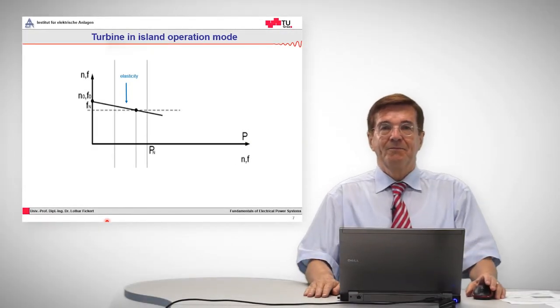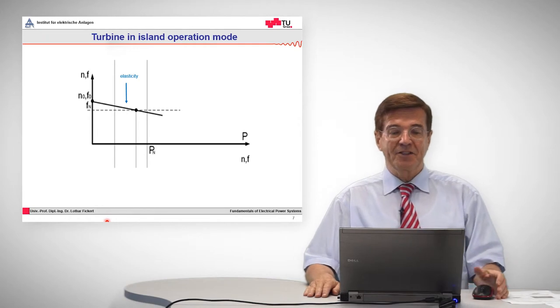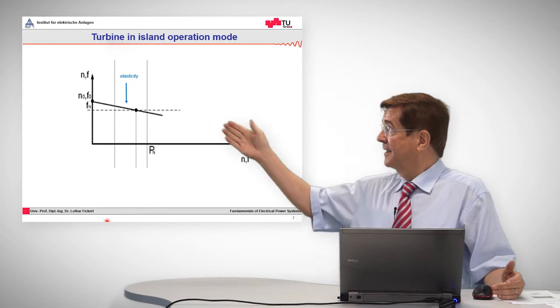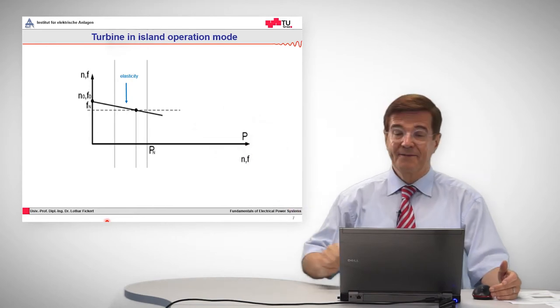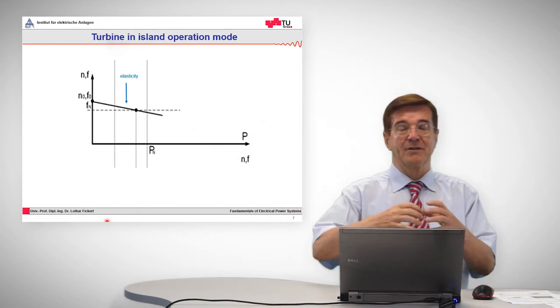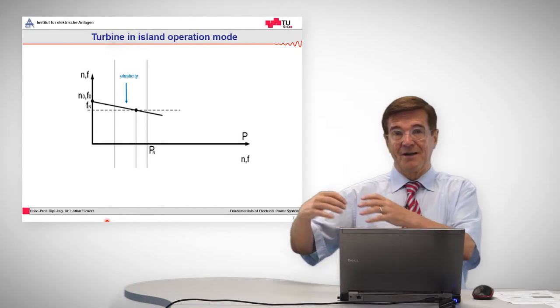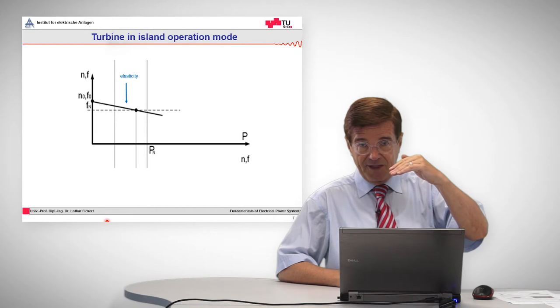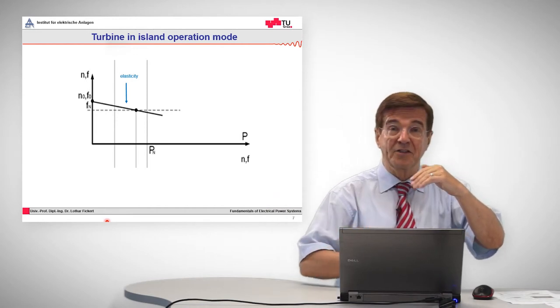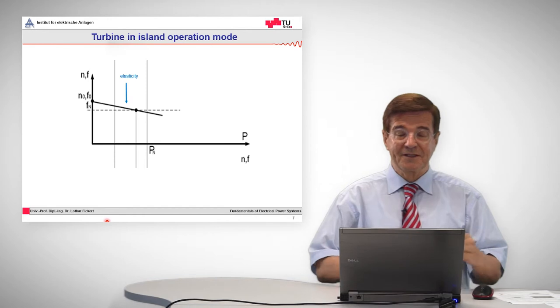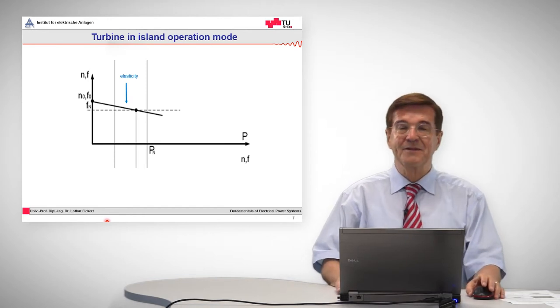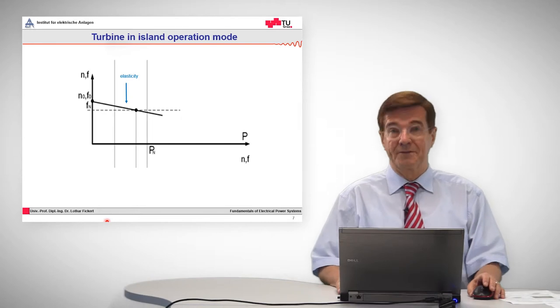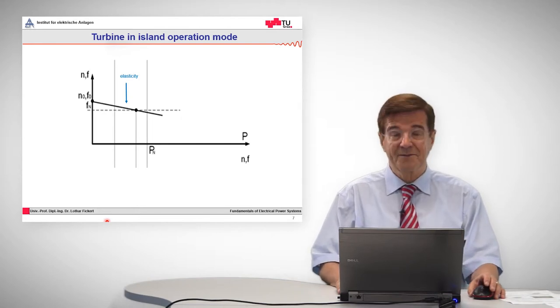The whole process can be shown by a simple diagram, which is called the frequency versus power diagram, which we can see here in this slide. That means when the power demand in such a system goes up, increases, comes to the right side, then the frequency will go down. And that means the power conversion from the primary process will be stepped up in order to keep the frequency stable. But in any case, there will stay a slight frequency deviation. But the system is stable.